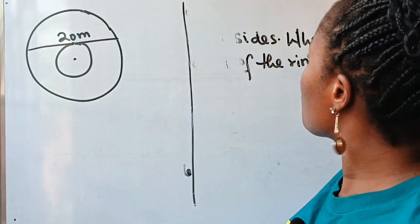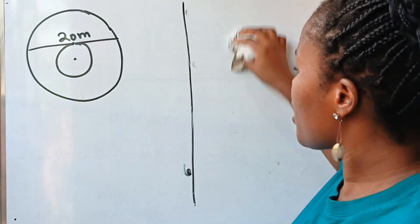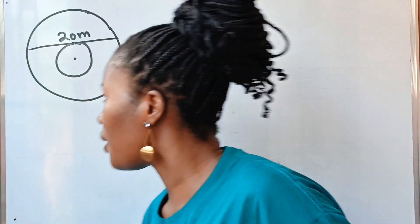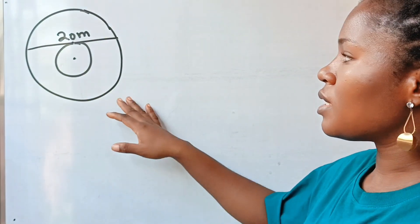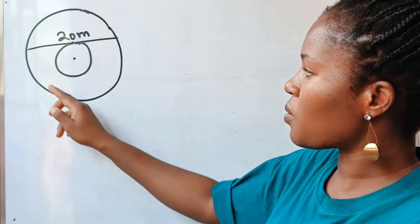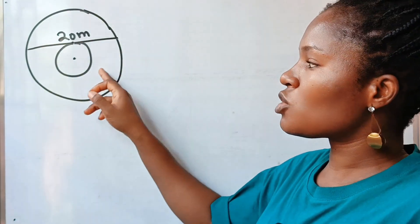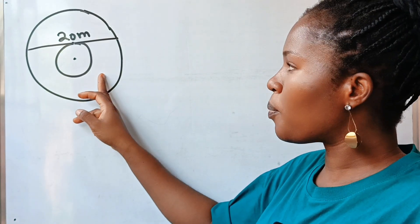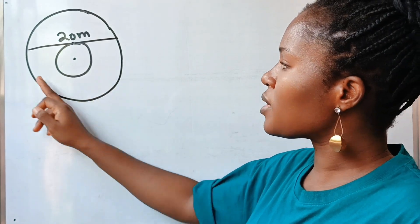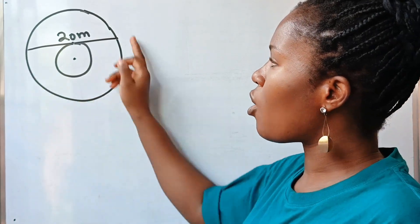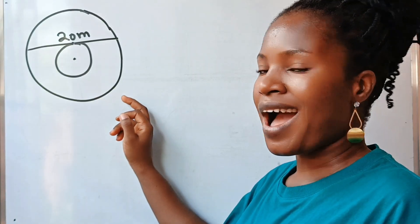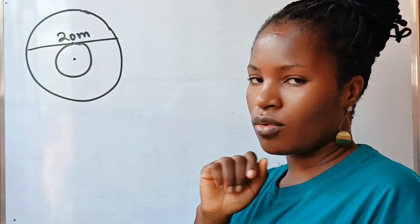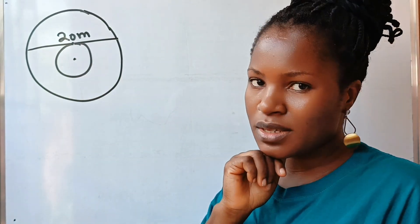We already know we are looking for the area of the ring. Now the ring itself is this place. So to get the area of the ring, it's simple. We need to get the area of this big circle and subtract the area of the small circle from it.